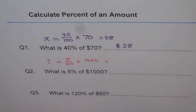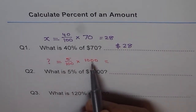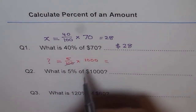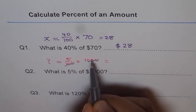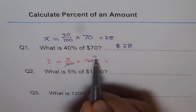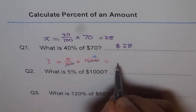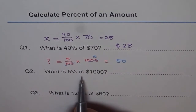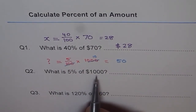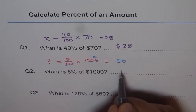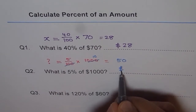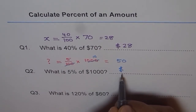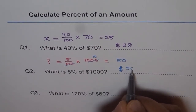100 goes how many times into 1000? 10 times. So when you divide 1000 by 100, you get two zeros cancelled, leaving 10. So 5 times 10 is 50. What is 5% of $1000? It will be $50. Don't forget to write the dollar unit.